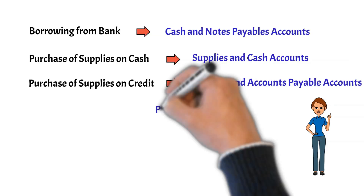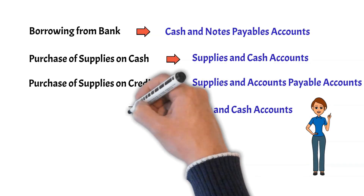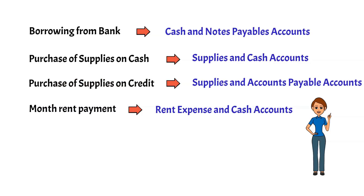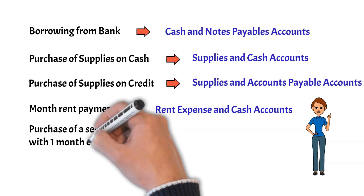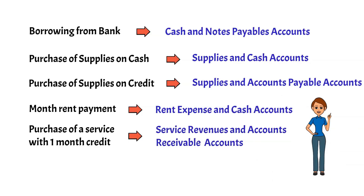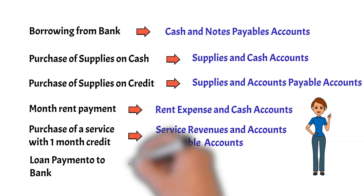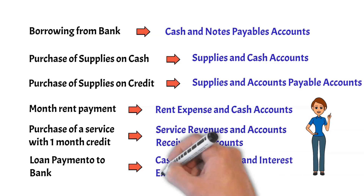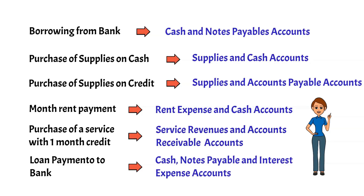Another example is rent expense and cash being the two accounts involved when a company pays the rent for the current month. Nevertheless, if a company provides a service and gives the client one month to pay, the service revenues and accounts receivable accounts are affected. Despite the fact that the system is known as double-entry, a transaction may include more than two accounts. As an example, a $500 loan payment to a bank is a transaction involving three accounts: cash, notes payable, and interest expense will all be affected by this transaction.